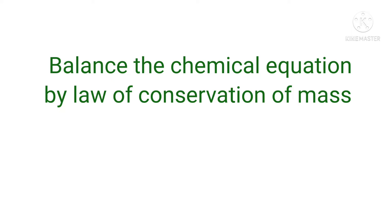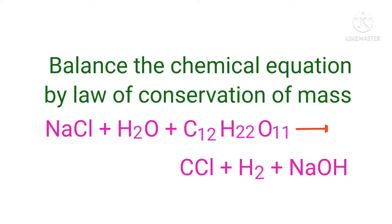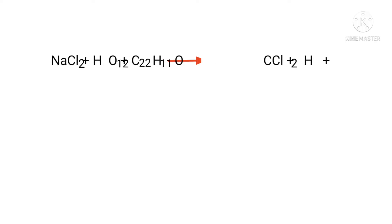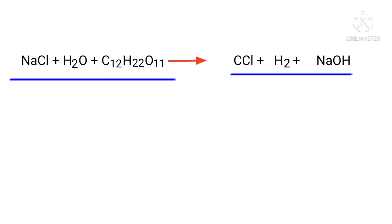Balance the chemical equation by the law of conservation of mass. Sodium chloride plus water plus sucrose gives us carbon monochloride plus hydrogen plus sodium hydroxide. In this equation the reactants are sodium chloride, water, and sucrose, and the products are carbon monochloride, hydrogen, and sodium hydroxide.